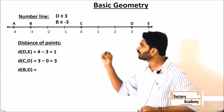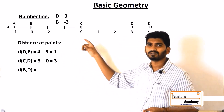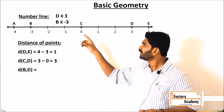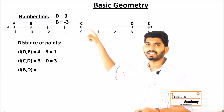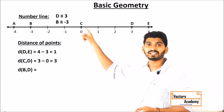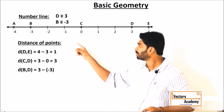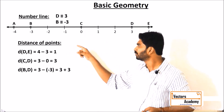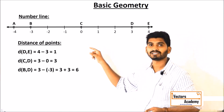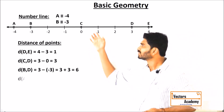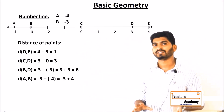Similarly we can look at other questions as well. Distance between B and D: the coordinate of B is minus 3 whereas the coordinate of D is 3. So which is the larger one? 3 is the larger one. So 3 minus minus 3, that will give you 3 plus 3, and that is equal to 6. So this is how we find the distance between two points.